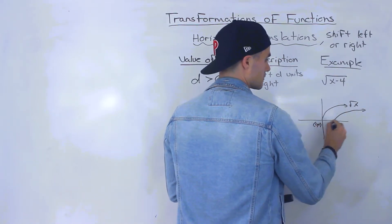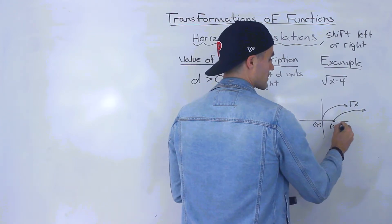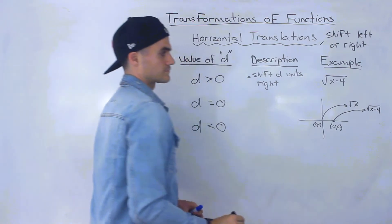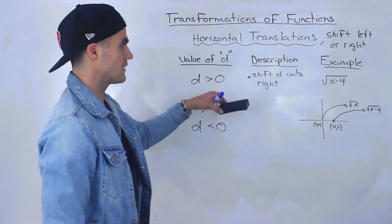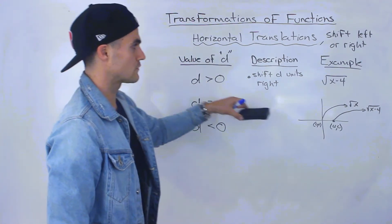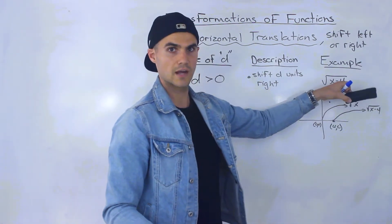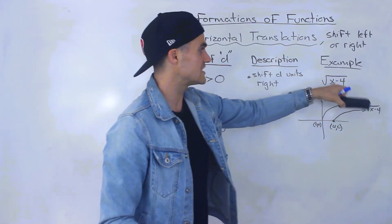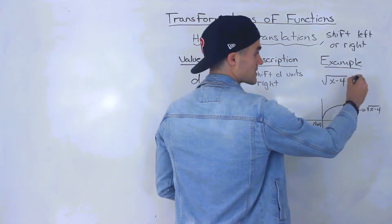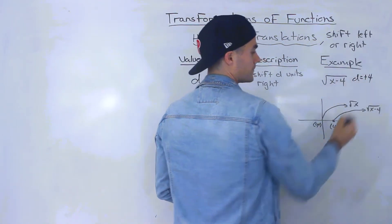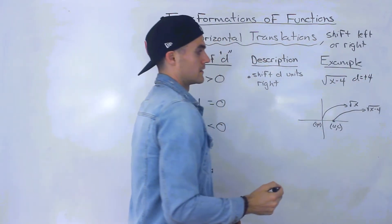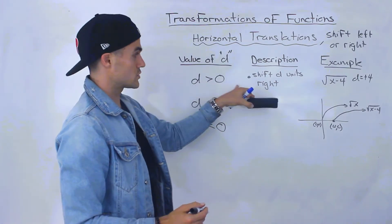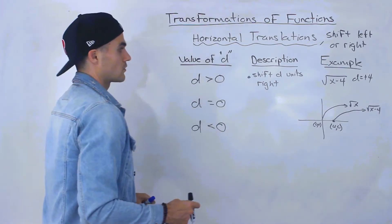Notice that the square root of x starts at (0, 0), so after shifting it would be at (4, 0). If that d value is positive — and remember it's always the opposite sign of what's written — so x minus 4 gives d equals positive 4, and since it's positive, we're shifting to the right.